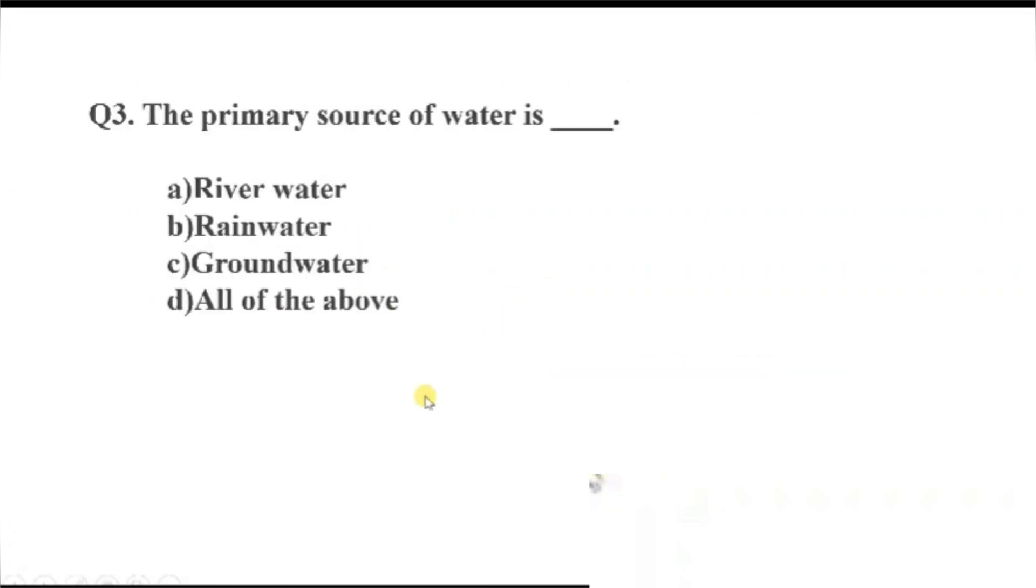Question number 3. The primary source of water is dash. Option A, river water. B, rainwater. C, groundwater. D, all of the above. The right answer, Option B, rainwater.